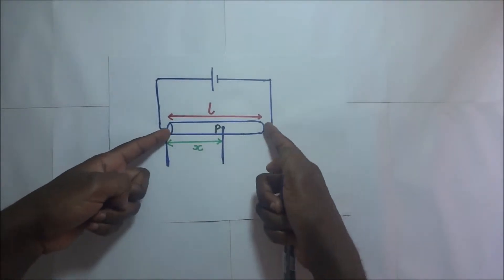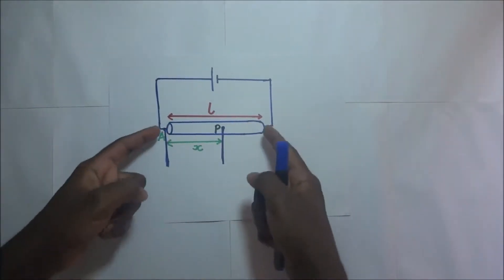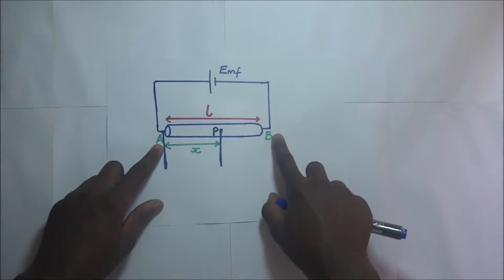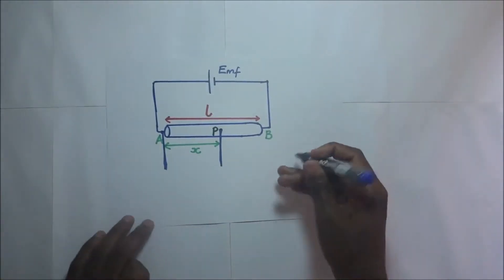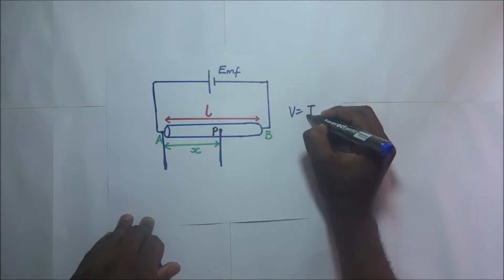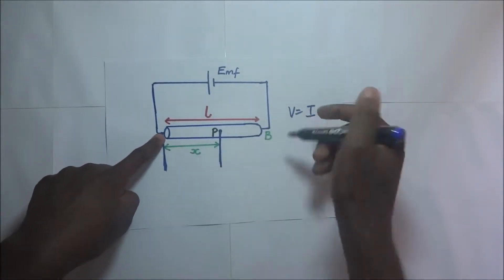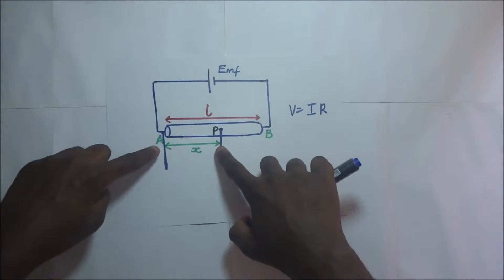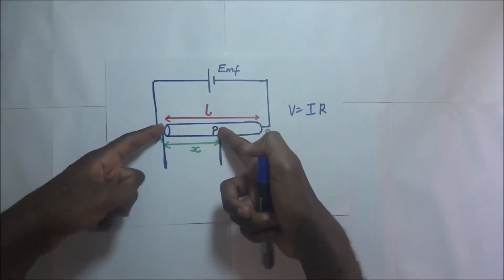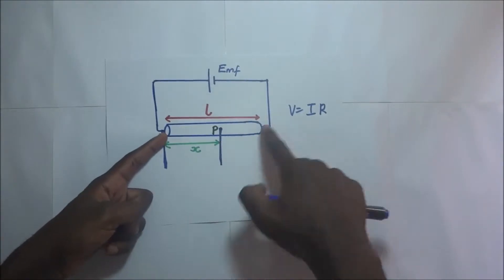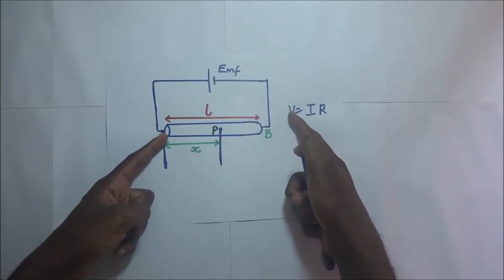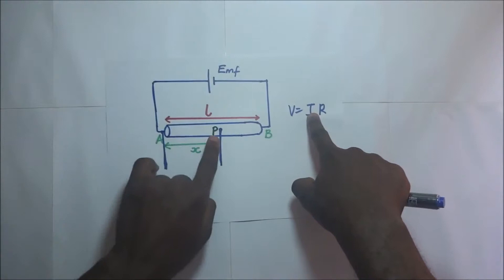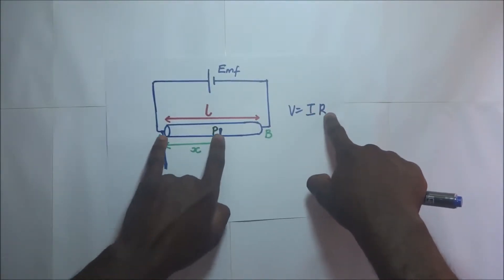Now the potential difference across the slide wire — this is a circuit — so the potential difference across that slide wire, V_AB, is definitely going to be equal to the current going through that slide wire times the resistance of that slide wire. The same applies if we want to find the potential difference across the portion AP: V_AP is going to be equal to the current going through that portion times the resistance from A to P.